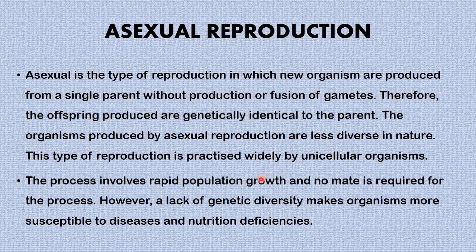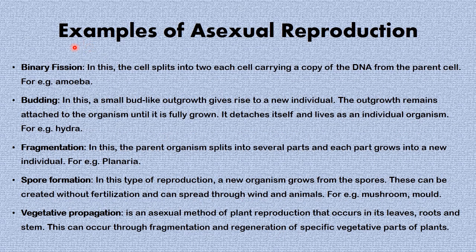The organisms produced by asexual reproduction are less diverse in nature. This type of reproduction is practiced widely by unicellular organisms — the example we saw earlier was Hydra. The process involves rapid population growth and no mate is required. However, a lack of genetic diversity makes organisms more susceptible to disease and nutritional deficiencies. The various types of asexual reproduction include binary fission, budding, fragmentation, spore formation, and vegetative propagation.